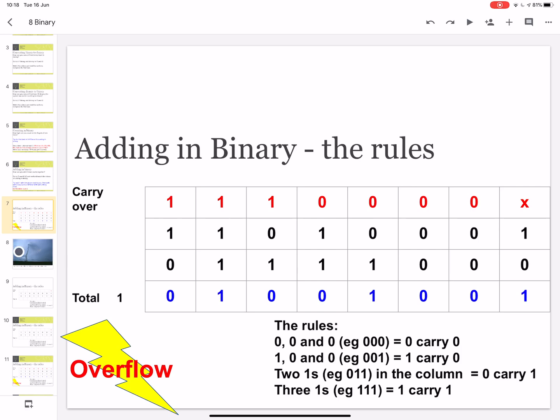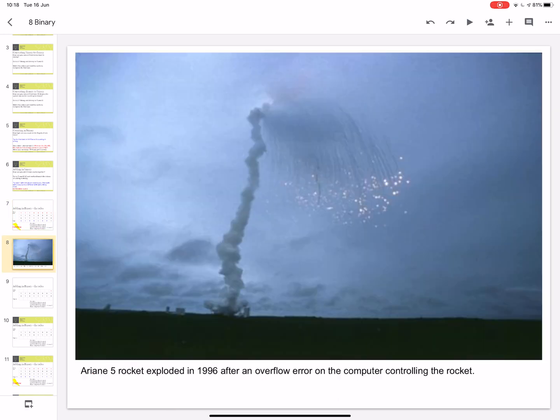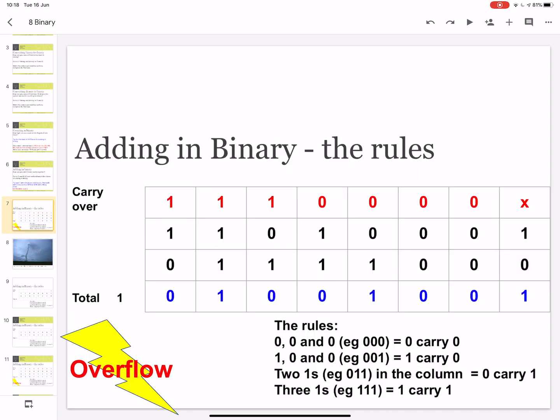Now, here's an example of where that can be a bad thing. So in 1996, there was a rocket launched by the European Space Agency called Ariane 5, and it exploded after an overflow error in the computer that controlled the rocket. What happened was the computer in the rocket was a 16-bit computer, so it could handle 16 bits. The software, however, was written for 32-bit.